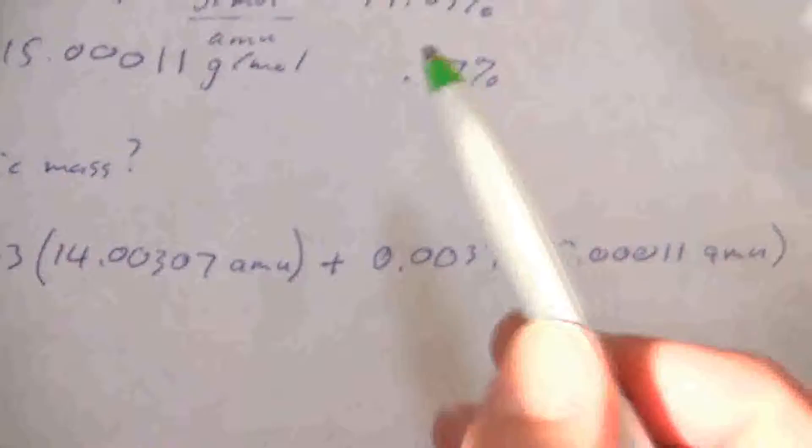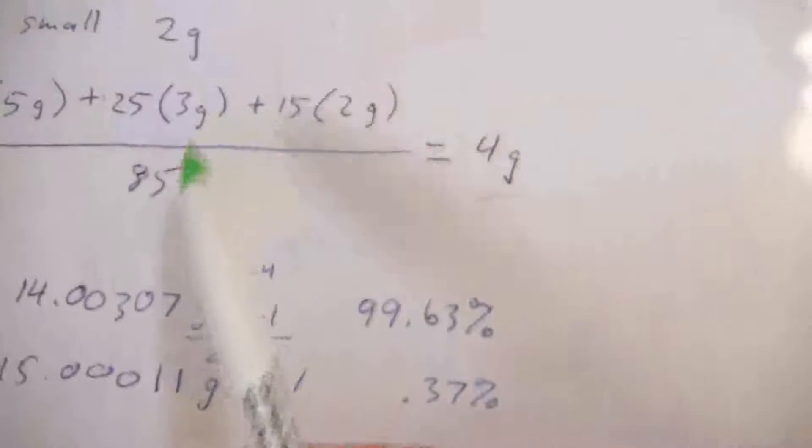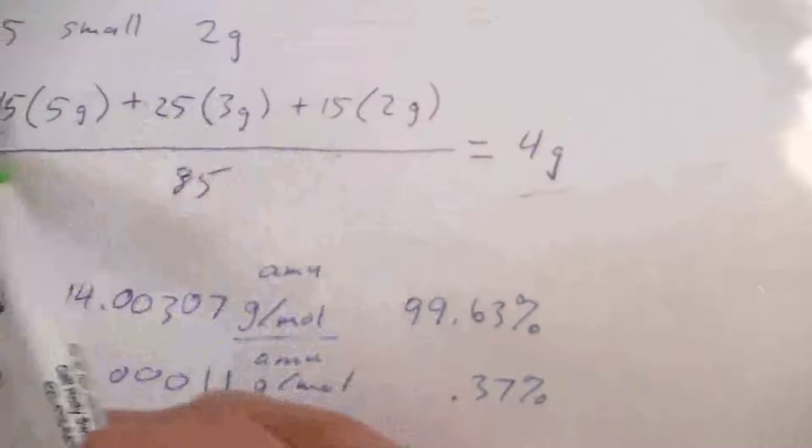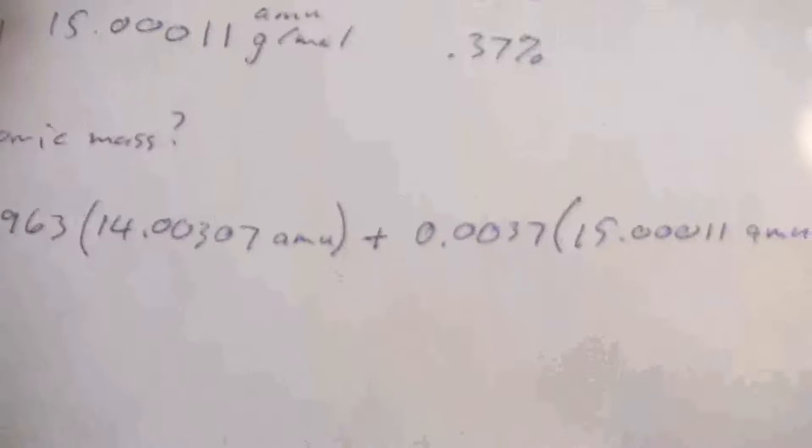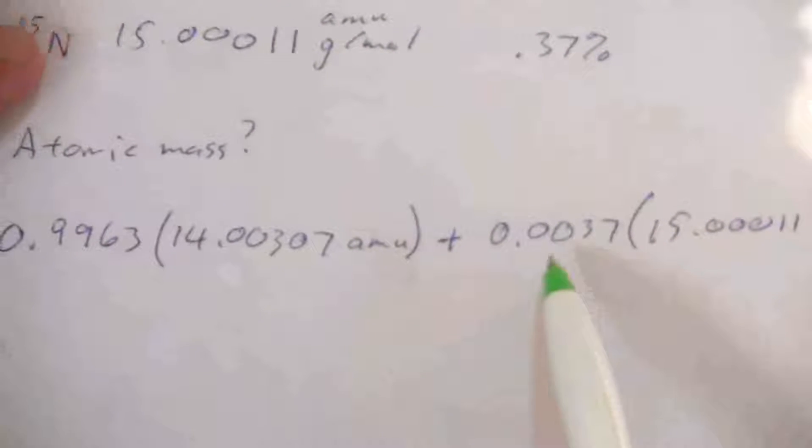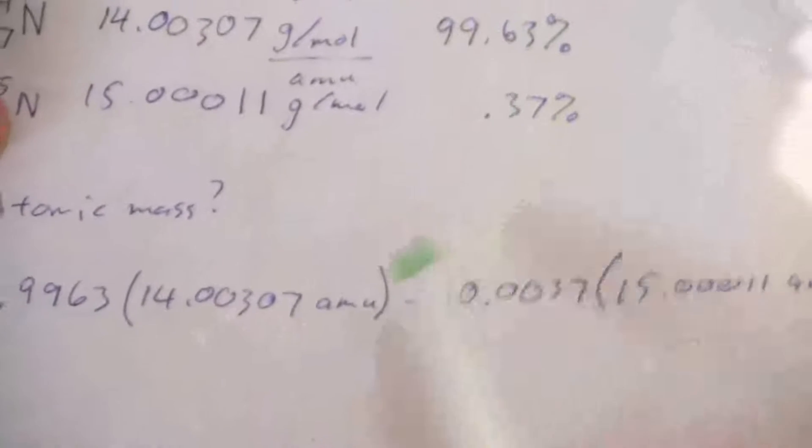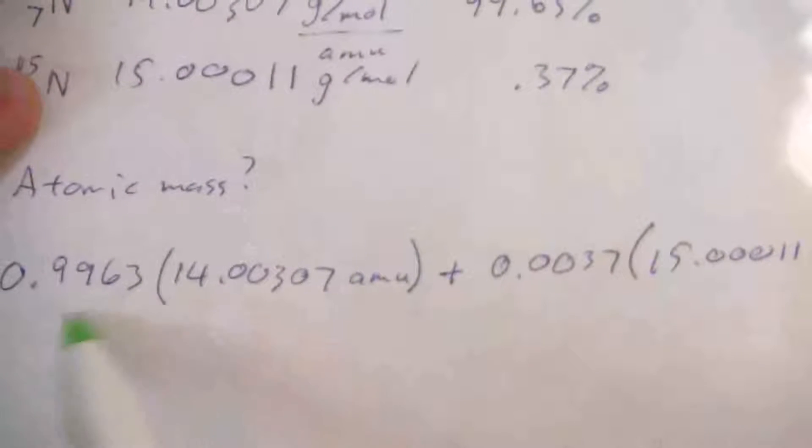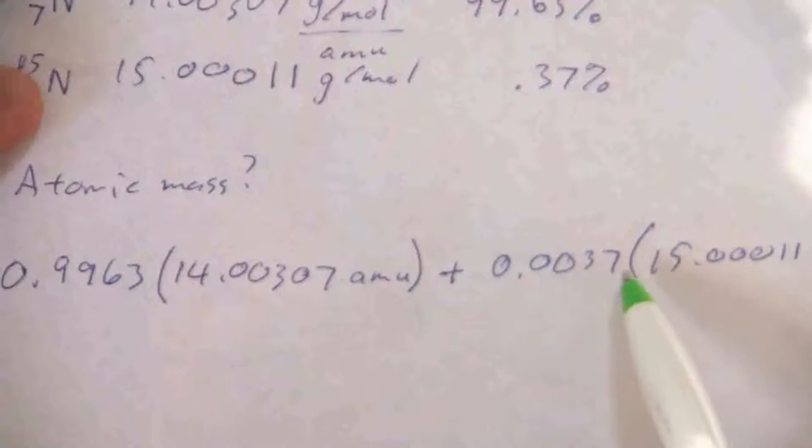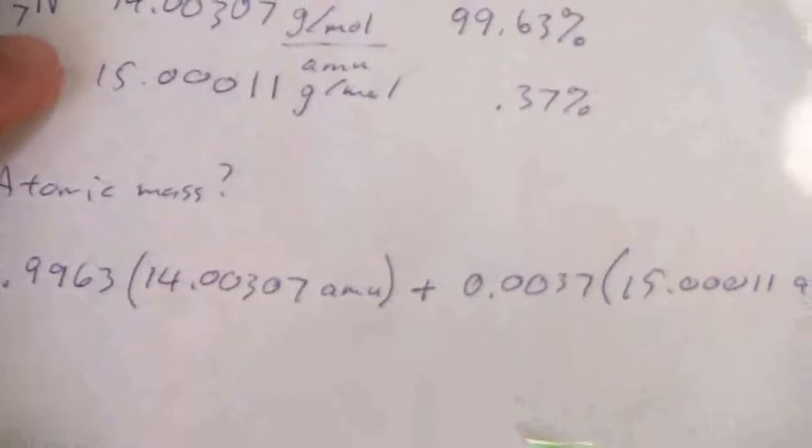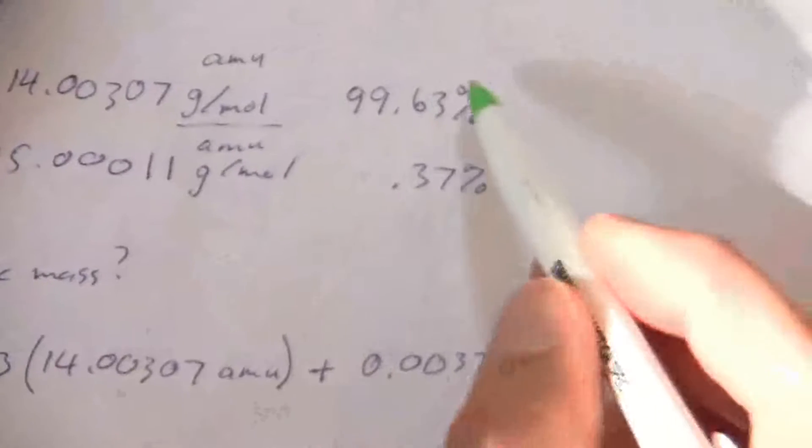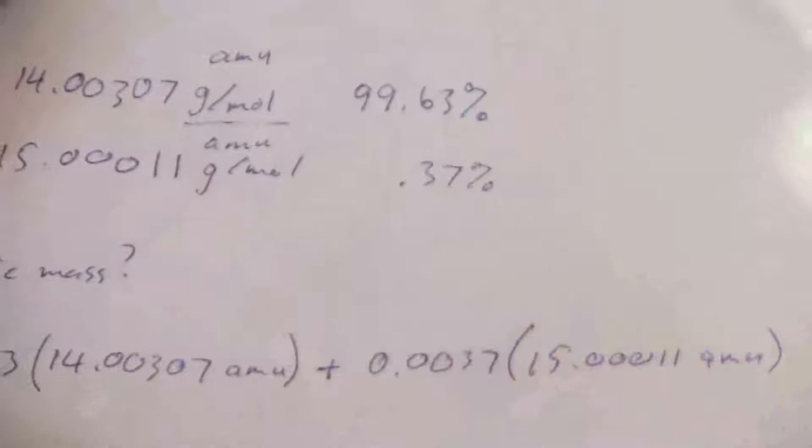And then I'm going to divide that by the total weight, the total mathematical weight for all of those. And that's where it simplifies it a little bit, because when I've taken this out of a percentage, it's now a decimal that adds up to one. 0.9963 and 0.0037 add up to 100%. So that's where percent abundance makes it nicer.